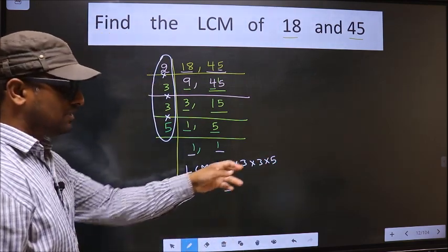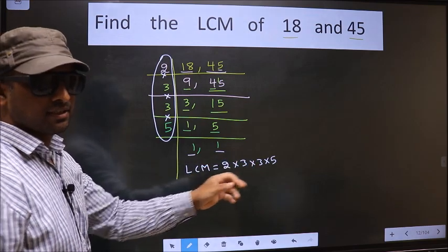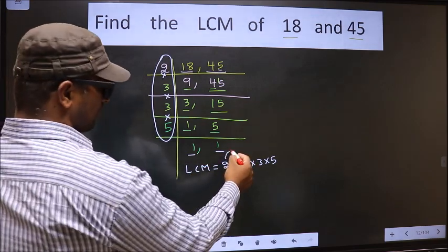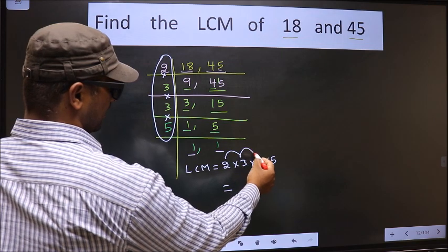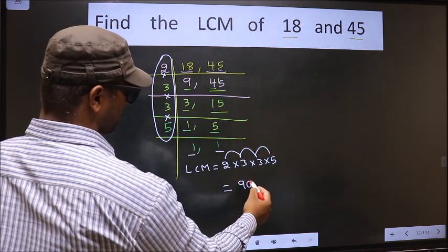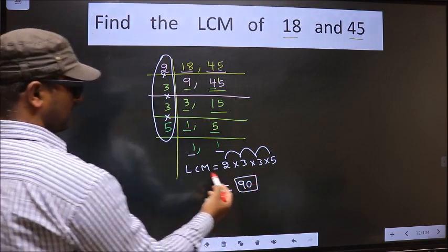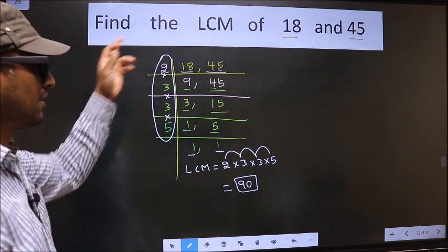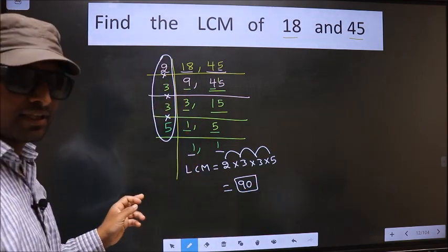Now let us multiply these. That is 2 × 3 = 6, 6 × 3 = 18, 18 × 5 = 90. So 90 is our LCM. Am I clear?